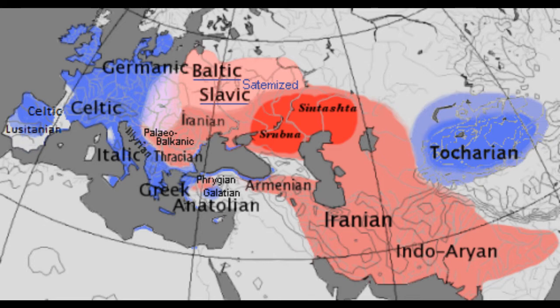The R1a peoples have something called satemization, which is a change in the language. The satem languages seem to have been in much closer contact than the centum languages. Centum languages are a mostly western branch of Indo-European, but it's been shown that Tocharian was part of the centum languages as well, so obviously they split off from an early centum group.